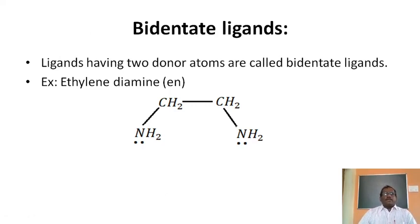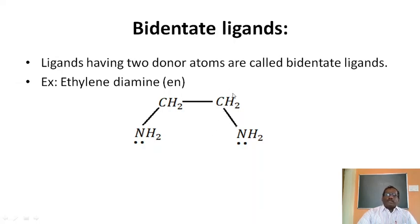Bidentate ligands are those having two donor atoms. Ligands with two donor atoms are called bidentate ligands. For example, ethylenediamine: NH2-CH2-CH2-NH2. The ethane part has one hydrogen on each carbon replaced by NH2 groups. The two nitrogen atoms of ethylenediamine each donate a lone pair of electrons, giving two donor atoms. Hence, ethylenediamine acts as a bidentate ligand.